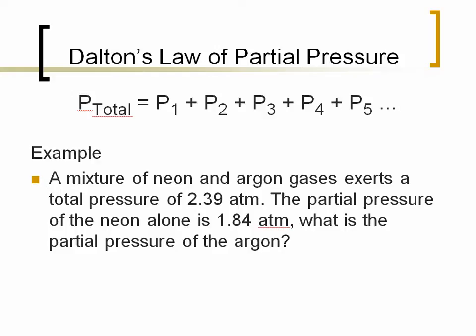So here we have a problem. A mixture of neon and argon gas exerts a total pressure of 2.39 atm. The partial pressure of neon alone is 1.84 atm. What is the partial pressure of argon? So since this is in the same container, we're simply going to use Dalton's Law of Partial Pressure. Total pressure equals the pressure of neon plus the pressure of argon.